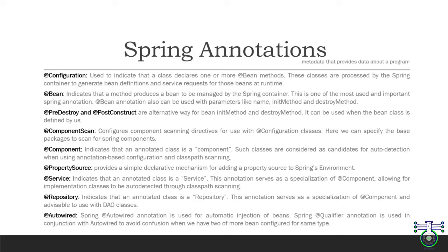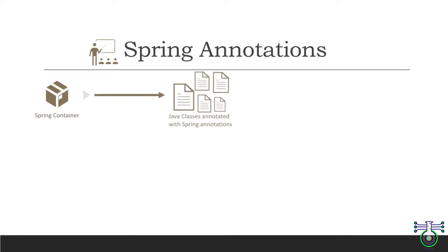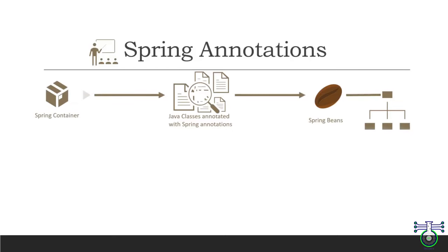What are Spring annotations? Spring annotations are special annotations that are used to annotate classes, methods and fields. These annotations are then processed by the Spring container to configure beans and manage their life cycles. One way to visualize how Spring annotations work is to think of them as instructions for the Spring container. When the Spring container starts up, it scans the classpath for classes that are annotated with Spring annotations and creates beans for these classes, managing their life cycle according to the instructions in the annotation.